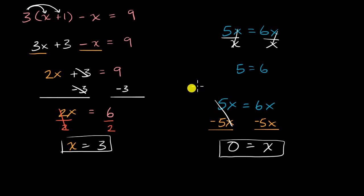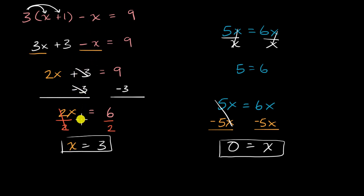The big takeaway here is to appreciate the equivalence of these equations. If you do algebraically valid operations, each step of your solution corresponds to an equation equivalent to the one before it — if one of them is true, then the others are true. But if you do an algebraically invalid operation, like dividing by x when x could equal zero, then you can start running into problems.